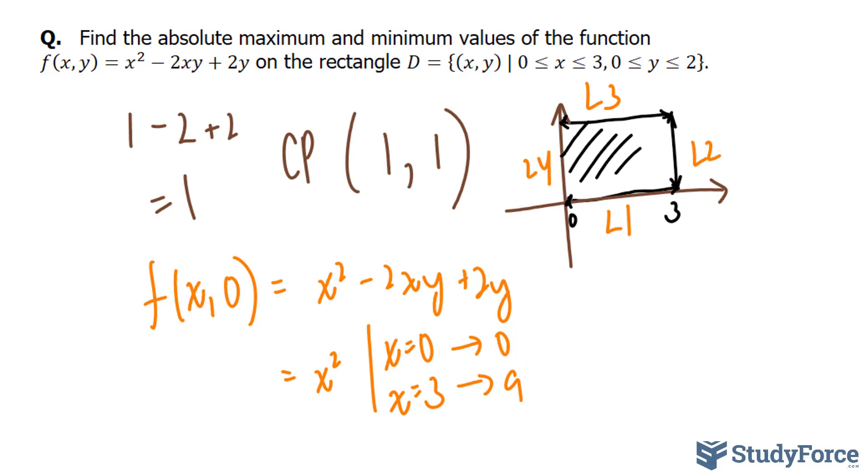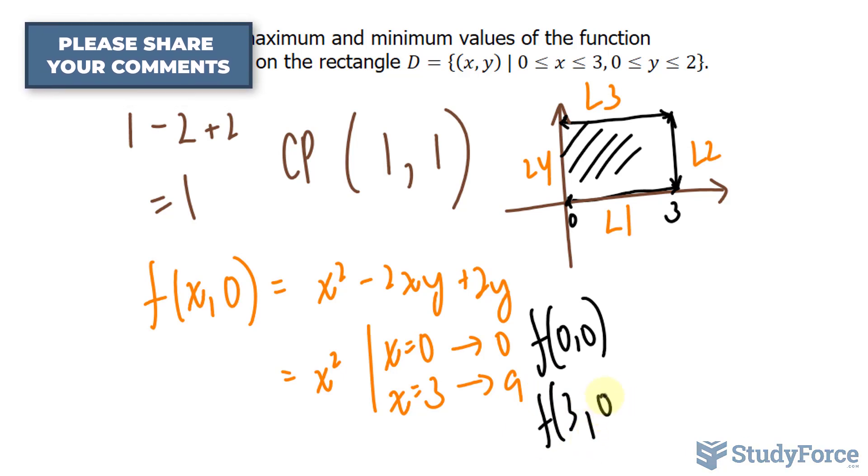It turns out that if you find all of the outputs for these lines, the minimum will be a value of 0, and it actually occurs at 0 and 0, and your maximum will be at 9, and that occurs at 3 and 0.